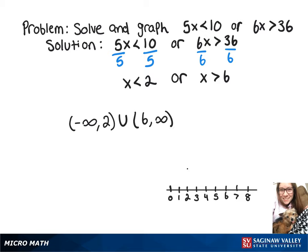So on our graph here, we're going to have an open circle on the 2, open circle on the 6, arrow pointing down to negative infinity from that 2, and an arrow pointing up to infinity from that 6.